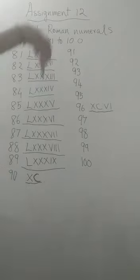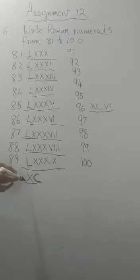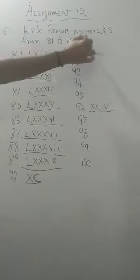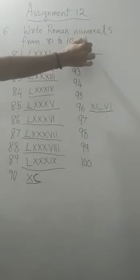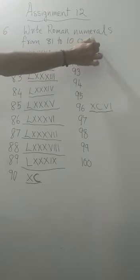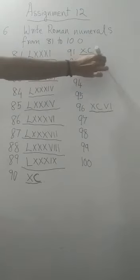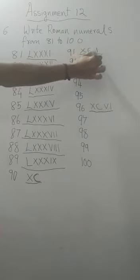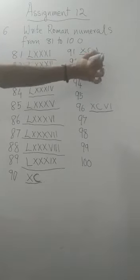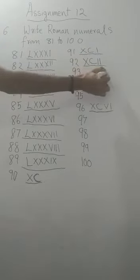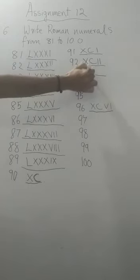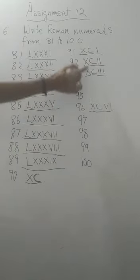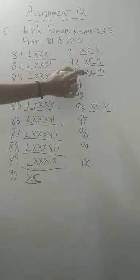Now, with this you will start the 91 to 100. So, this is 90. That means you will write 91 will be, you will write the same 90. This is 90. And you will write a 1. 91. Then, you will write 90 and 2. 92. And you will write 90 and 3. 93. 91, 92, 93.